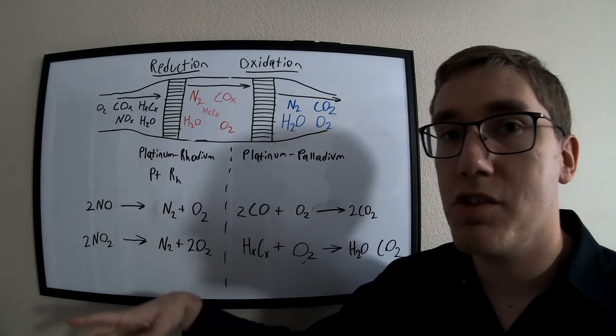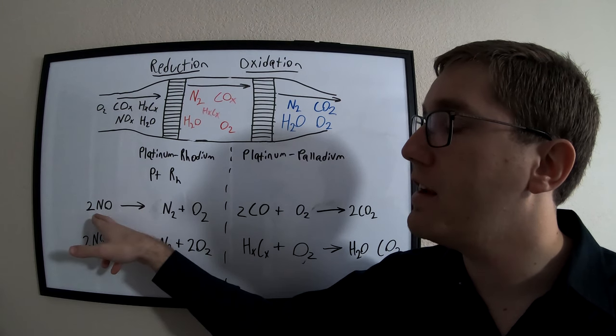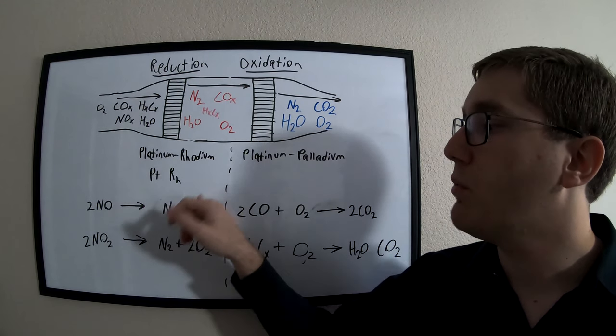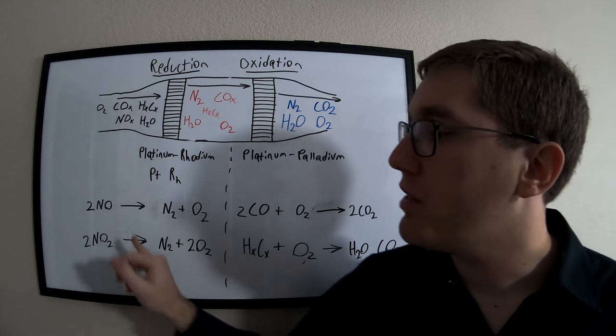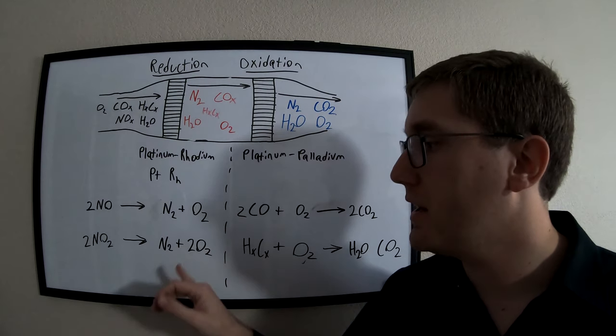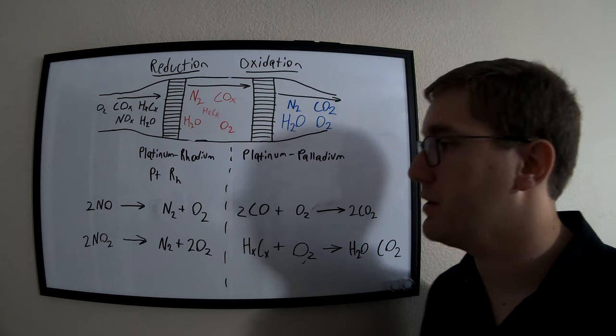In the case of nitric oxide, we usually have two molecules, 2NO, and this gets converted into one molecule of nitrogen and one molecule of oxygen. With nitrogen dioxide, we will have two molecules again. This will end up combining into one nitrogen molecule and two oxygen molecules.